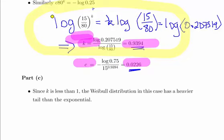The third part asks us about the relationship or comparison between the Weibull distribution and the exponential distribution. In this case K is less than 1, and that means the Weibull distribution has a heavier tail compared to the exponential distribution.